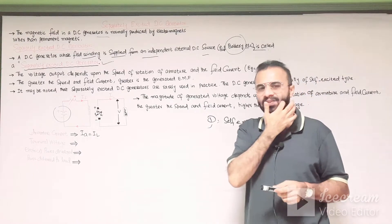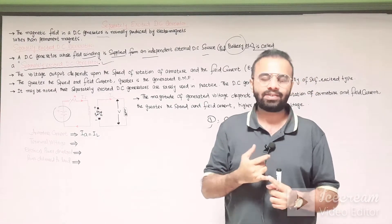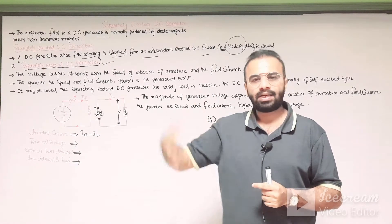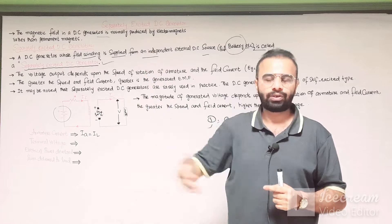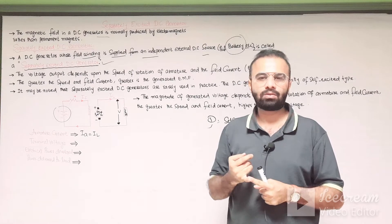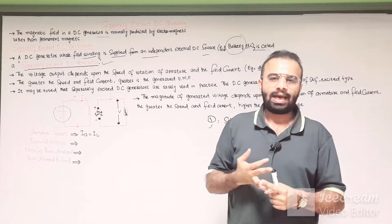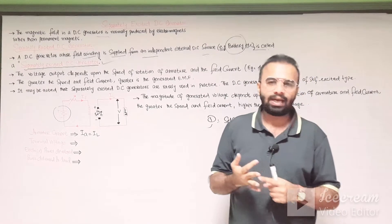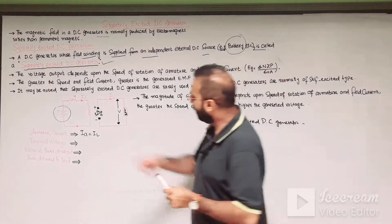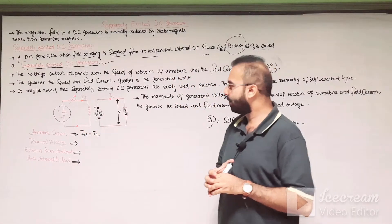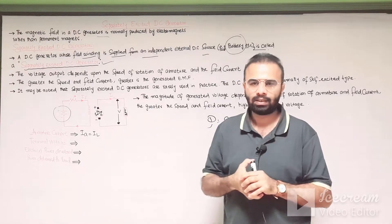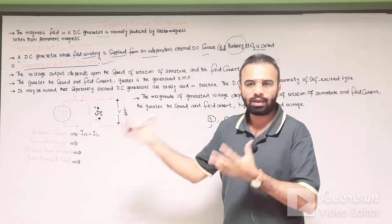Recall the concepts of the DC generator. There are five essential parts of the DC machine, whether it acts as a generator or as a motor. Number one is the field system, second is the armature core, third is the armature winding, fourth is the commutator, and fifth is the carbon brushes. The field winding and the armature winding are the two major parts of any DC machine, whether it is a generator or a motor.